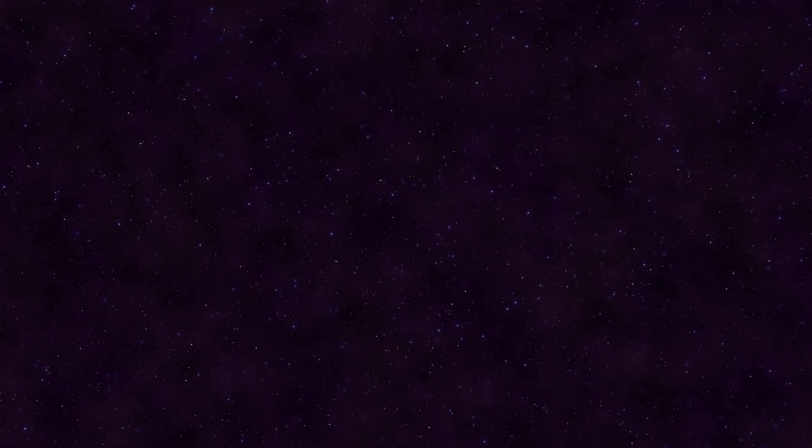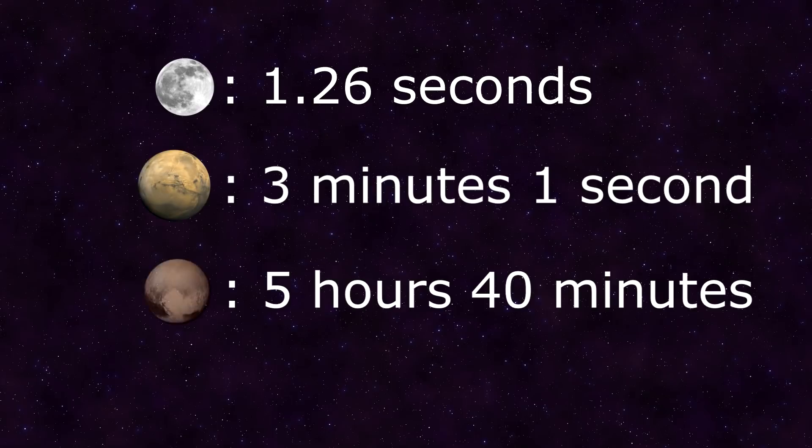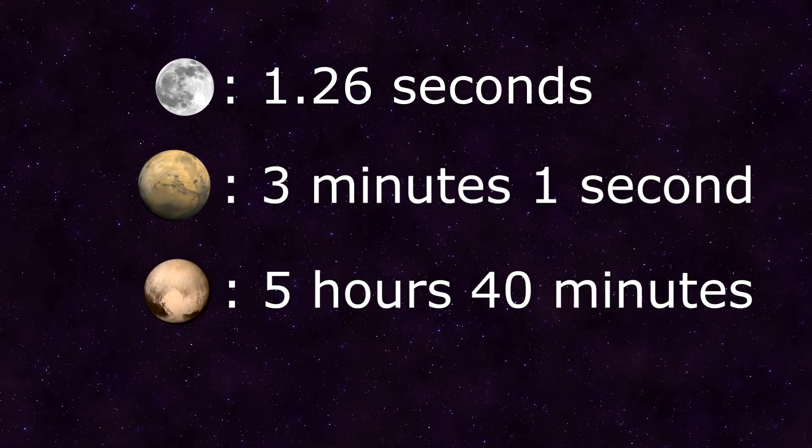Light is fast here on Earth. But in space, it quickly becomes limited. To the moon at the speed of light is just 1.26 seconds. To Mars is 3 minutes. To Pluto is 5 hours. This is a significant improvement for interplanetary travel.